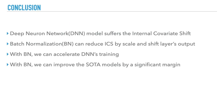At last, let me conclude the paper. Deep neural network models suffer from internal covariate shift. Batch normalization can reduce ICS by scaling and shifting the layer's output. With BN, we can accelerate DNN training, and we can improve state-of-the-art models by a significant margin.